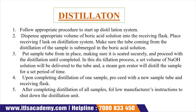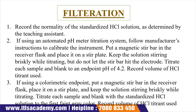Procedure — Distillation: Follow the appropriate start-up procedure for the distillation system. Dispense an appropriate volume of boric acid solution into a receiving flask and place the receiving flask on the distillation system, ensuring the tube from the distillation unit is submerged in the boric acid solution. Place the sample tube securely and proceed with distillation until complete. A set volume of NaOH solution will be delivered to the tube, and steam will distill the sample for a set period of time. Upon completing distillation of one sample, proceed with a new sample tube and receiving flask. After completing all samples, follow the manufacturer's instructions to shut down the distillation unit.